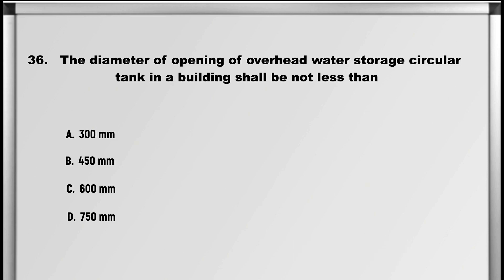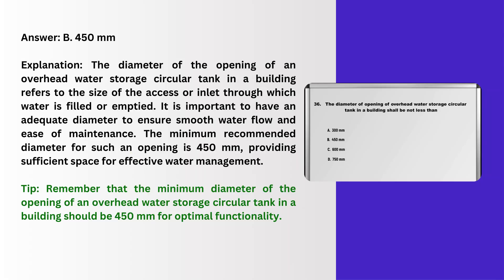Next up is question number 36: The diameter of the opening of an overhead water storage circular tank in a building shall be not less than: A. 300 mm, B. 450 mm, C. 600 mm, D. 750 mm. Answer: B. 450 mm.